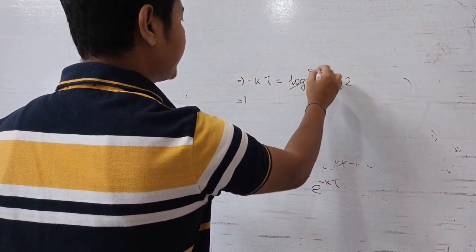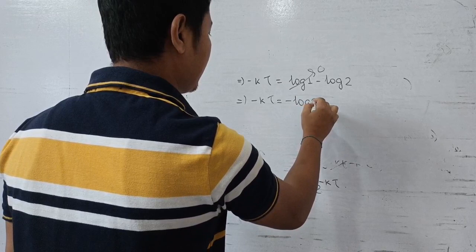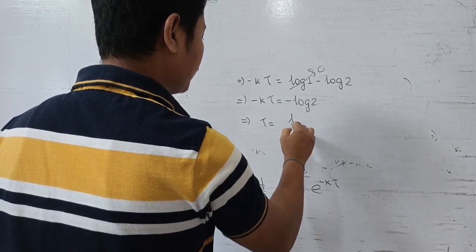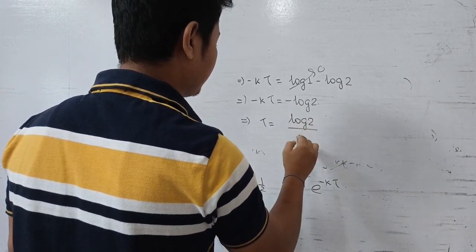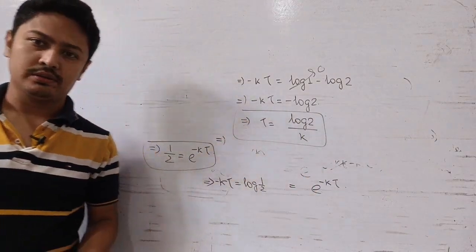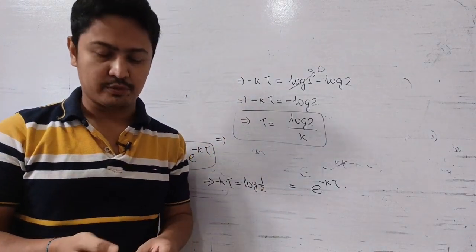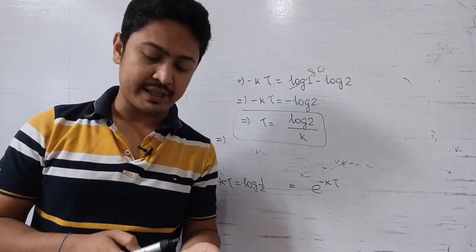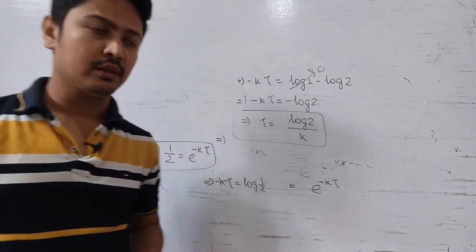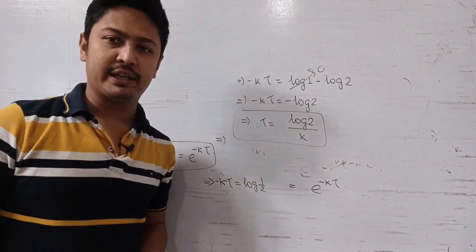Taking the logarithm: since log(1) = 0, we get −k·tau = −log(2), therefore tau = log(2) / k. This is the expression for half-life of the exponential decay and radioactivity compartmental model.